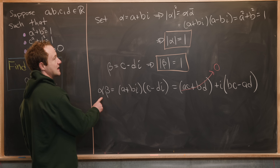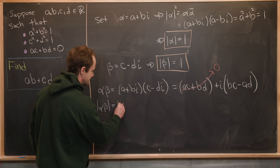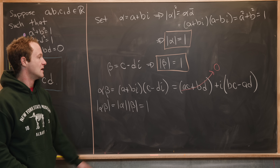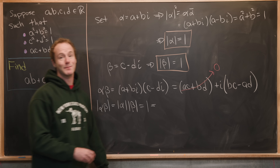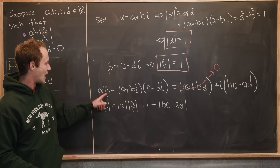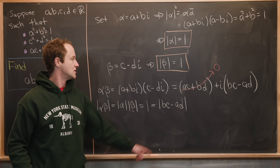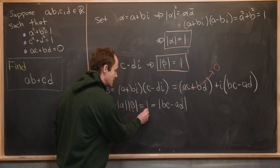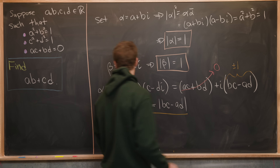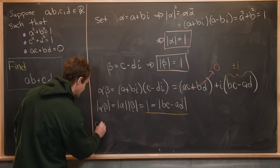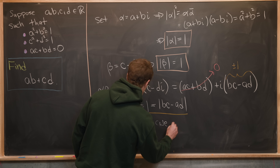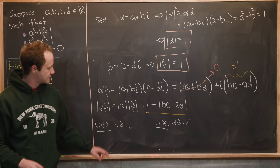We can use the fact that the modulus of alpha times beta equals the modulus of alpha times the modulus of beta, which equals one. But from the equation above, the modulus also equals the absolute value of bc minus ad. So that tells us bc minus ad equals plus or minus one, meaning alpha times beta equals either positive i or negative i.